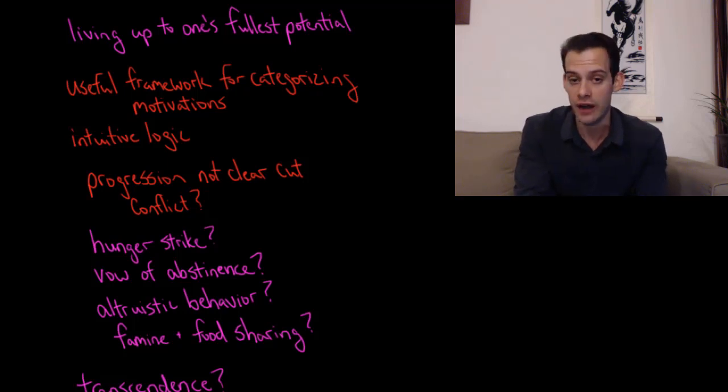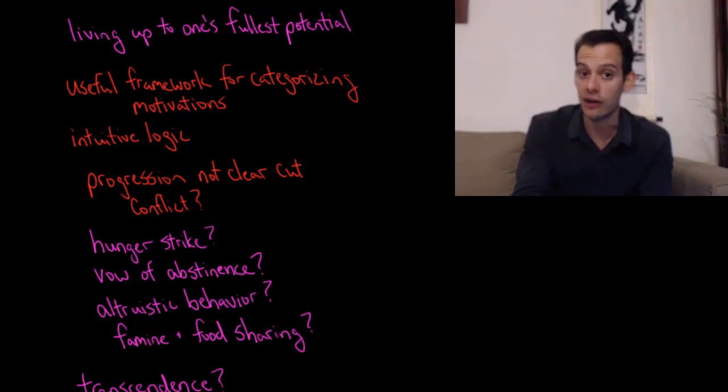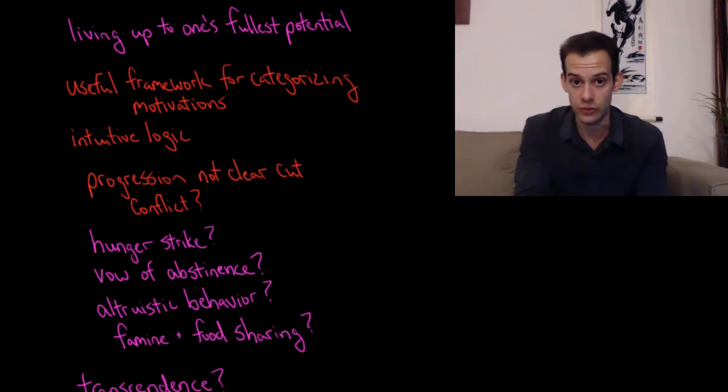So we might think about somebody who's on a hunger strike. Here they're putting aside their physiological need for food in order to serve some higher purpose. Or somebody who takes a vow of abstinence is doing much the same thing. Or we can think about altruistic behavior where somebody puts their own safety in danger or their own physiological needs in order to help someone else, maybe a friend or a family member. In that case, maybe they're putting their sense of belonging, or maybe it's even a stranger, just someone else in their community, and they're putting that person first rather than their own physiological needs or their own safety.